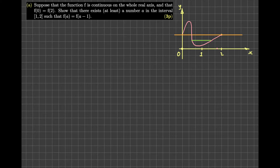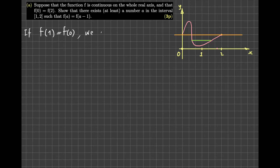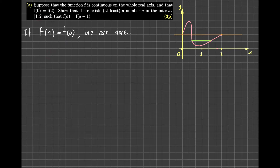Now we want to prove this rigorously. I consider some possibilities. One possibility is that f of 1 is equal to f of 0 — in that case we are done. Why? Because 1 is in the closed interval, and if f of 1 equals f of 0, then setting a equal to 1 gives f of a equal to f of a minus 1.